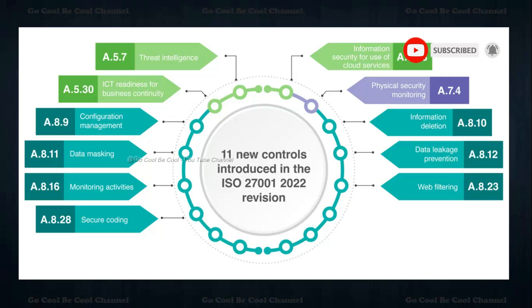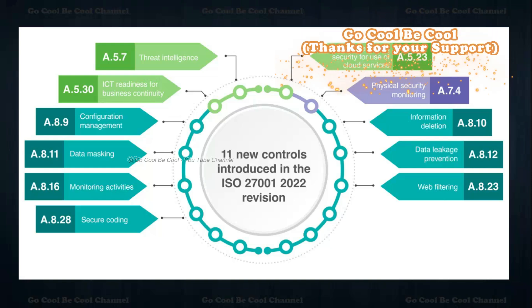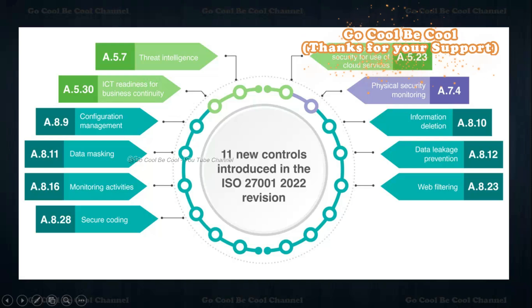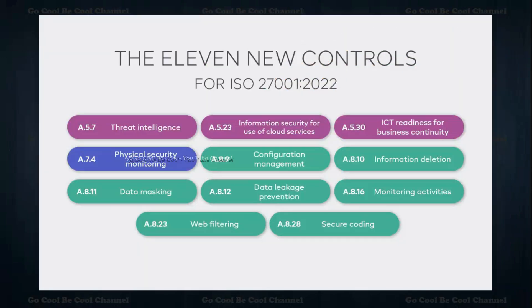Now let's look at the 11 new controls introduced in ISO 27001 2022. These include: A.5.7 Threat Intelligence, A.5.30 ICT Readiness for Business Continuity, A.8.9 Configuration Management, Data Masking, Monitoring Activities, Secure Coding, A.5.23 Information Security for Use of Cloud Services, Physical Security Monitoring, and Information Deletion, Data Leakage Prevention, and Web Filtering.